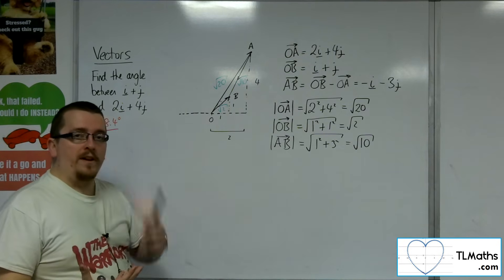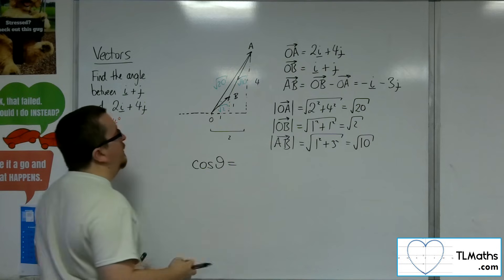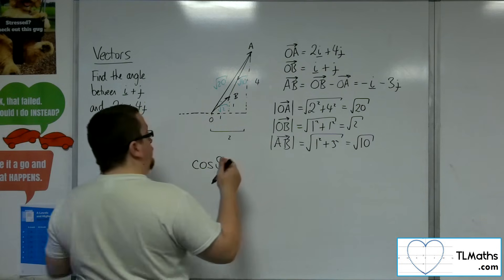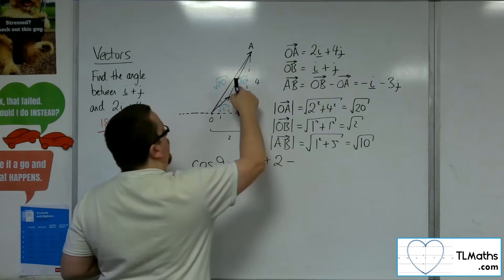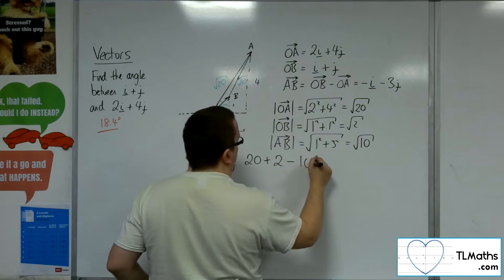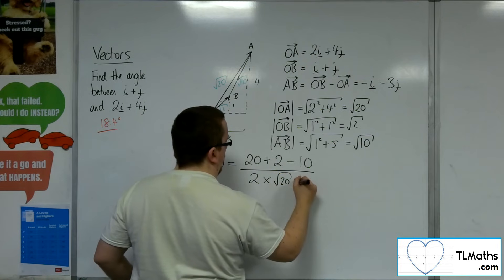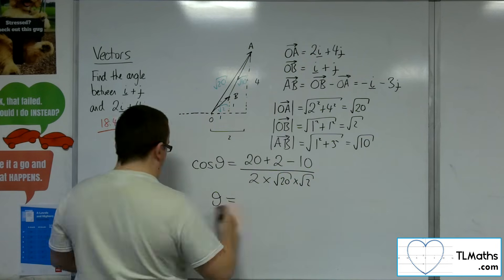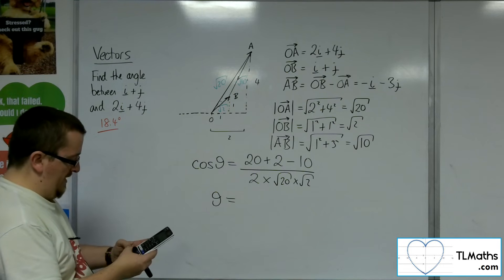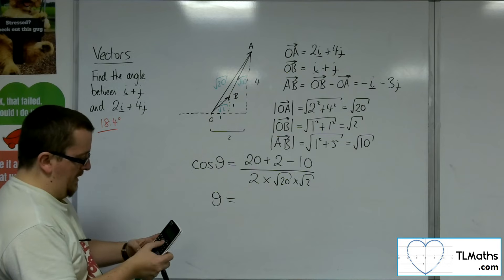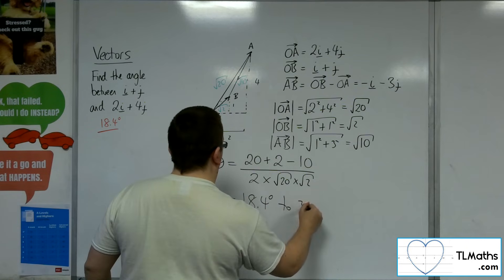So now, because I've got the three sides of the triangle, I can use the cosine rule. So cosine of the angle is equal to, well, we've got that side squared plus that side squared. Take away that side squared, the opposite side to the angle squared, divided by 2 times root 20 times root 2. So then I can inverse cosine this fraction. So 20 plus 2, take away 10 in the numerator. 2 times root 20 times root 2 in the denominator. And I get 18.4 degrees to 3 sig fig.